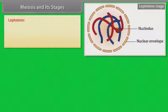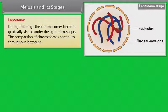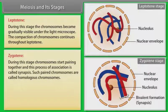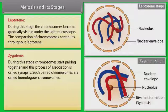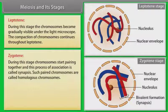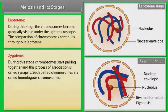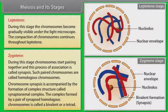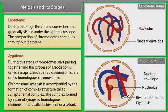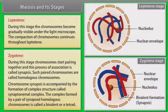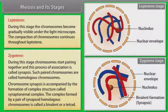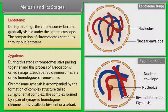During leptotene stage, the chromosomes become gradually visible under the light microscope. The compaction of chromosomes continues throughout leptotene. This is followed by the second stage of prophase 1 called zygotene. During this stage, chromosomes start pairing together and this process of association is called synapsis. Such paired chromosomes are called homologous chromosomes. Electron micrographs of this stage indicate that chromosome synapsis is accompanied by the formation of complex structure called synaptonemal complex.